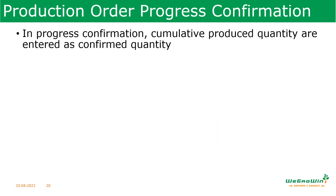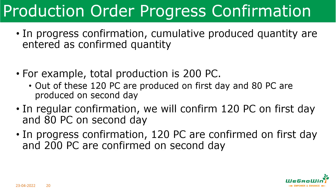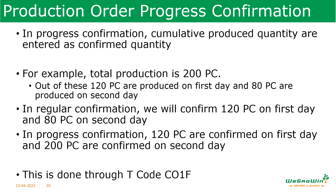Next is progress confirmation. In progress confirmation, the cumulative produced quantity must be entered as the confirmation quantity. For example, if production quantity is 200 pieces — 120 produced on day one and 80 on day two — in regular confirmation you enter 120 then 80. But in progress confirmation, day one you enter 120, day two you enter 200 as the cumulative. This is done through transaction CO1F.